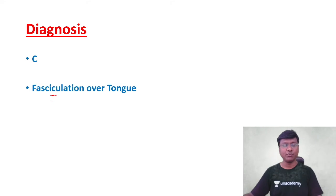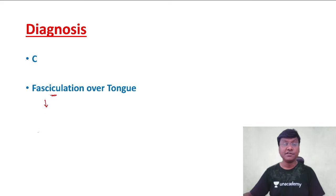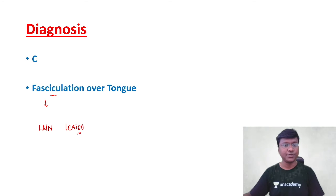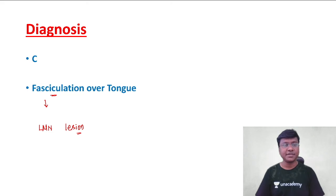Whatever you are seeing over the tongue is fasciculations. Fasciculations are a sign of lower motor neuron lesion — they are the sign of the lower motor neuron lesion.